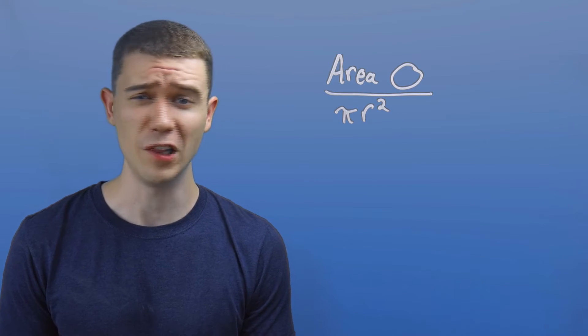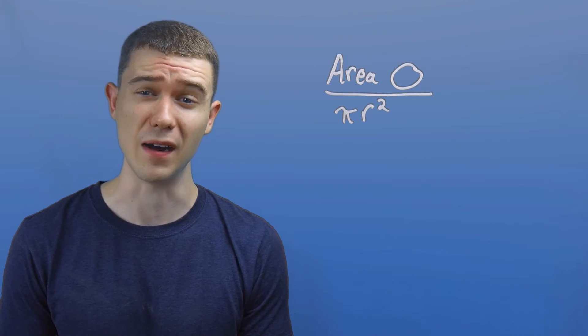Tau is almost certainly better for a geometrical approach to the unit circle. But what about equations? Now, one of the first equations you probably learn involving pi is the area of a circle.